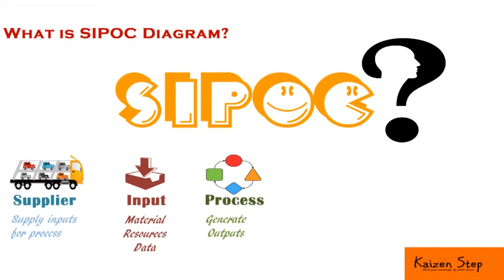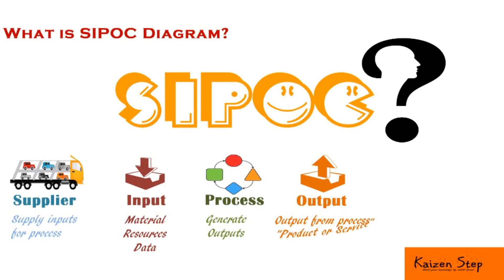The fourth letter is O, which stands for Output. Output refers to the products or services that result from your process. These are the tangible things that the process produces — for example, a report or a product.